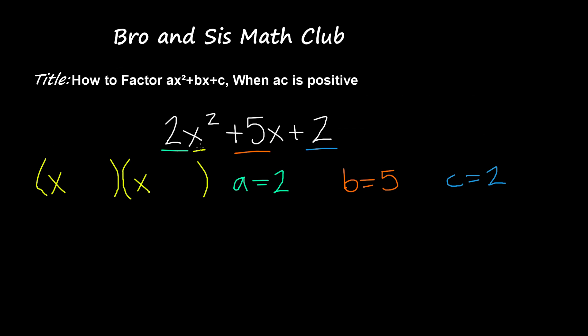And now what we're going to do is multiply a times c. So you go ahead and multiply a times c, so ac, and that's why in our title it's written that when ac is positive. We have positive 2 times positive 2, right? ac equals positive 2 times positive 2, and that gives us 4.